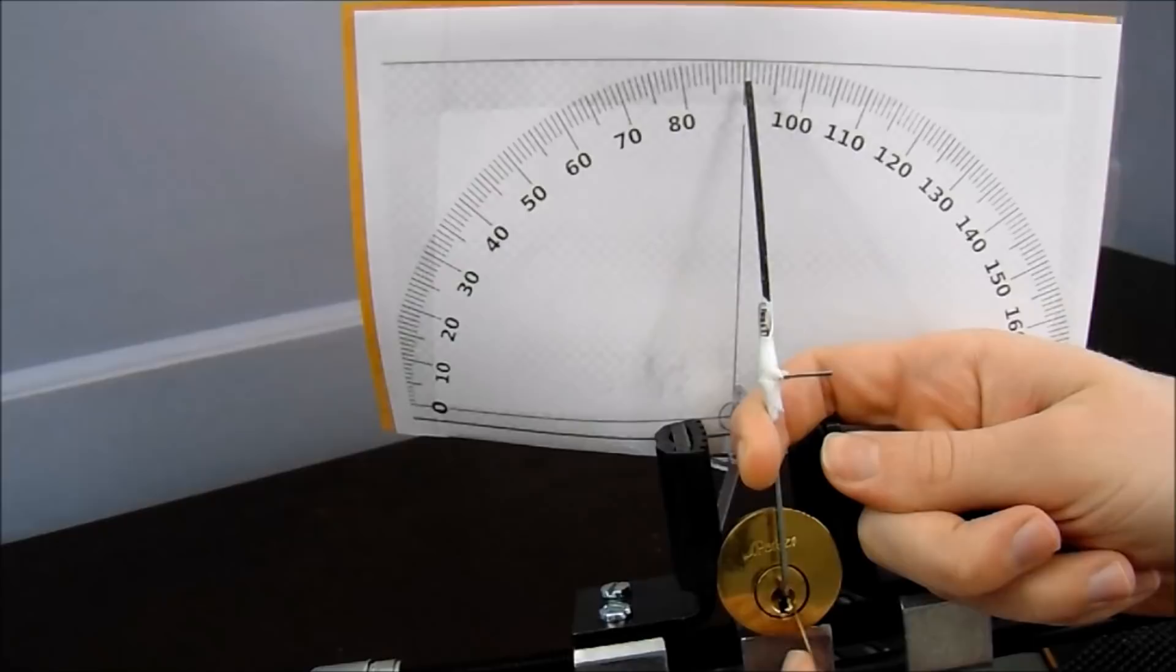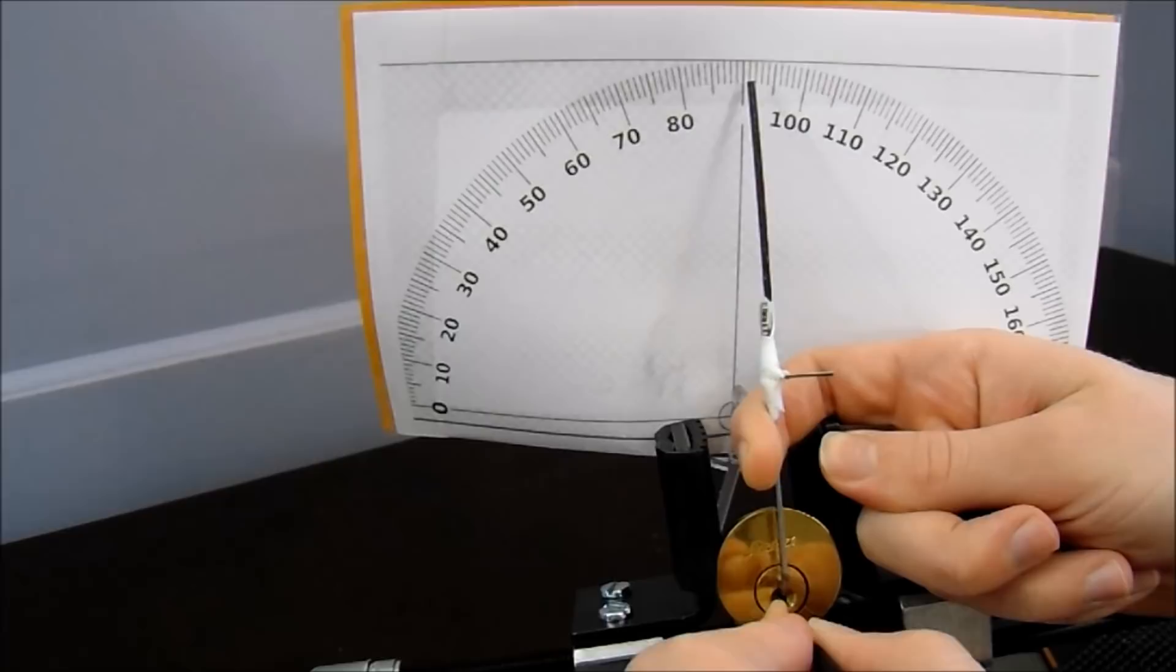Let's see. Small little click on one, that one feels set. Very small click on two, that feels set.